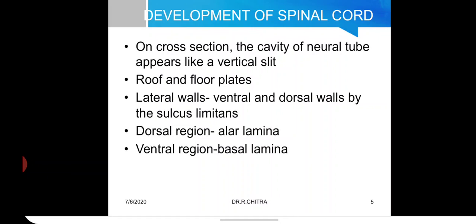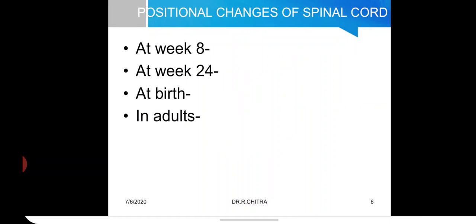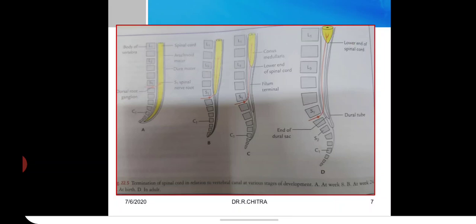At this stage of development, the central canal is diamond-shaped on cross section, and later converts to the form seen in the adult spinal cord. Regarding positional changes: at week 8, the spinal cord extends the whole length of the vertebral column; at week 24, it extends to the sacral segments; at birth it lies at the lower border of L3; and in the adult it is at the lower border of L1.